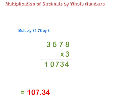Number of decimal places in the multiplicand is 2. So, leave two digits from the right in the product and put the decimal. So, we put the decimal before 34.